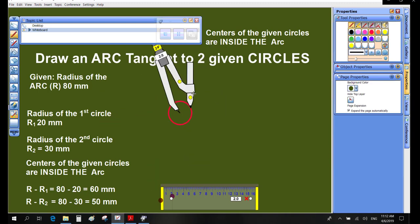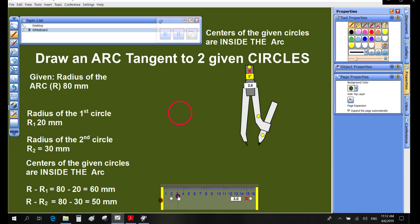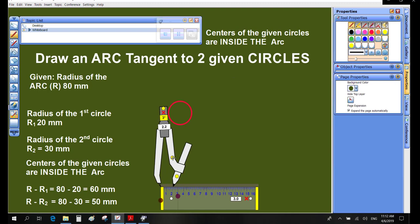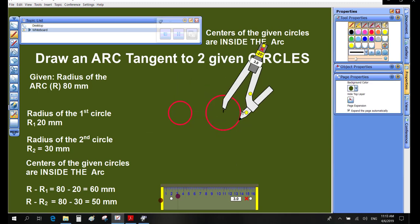Draw a circle with radius R1. Draw another circle with radius R2.